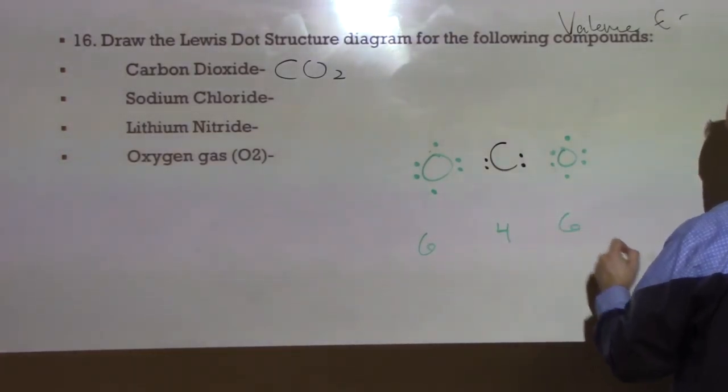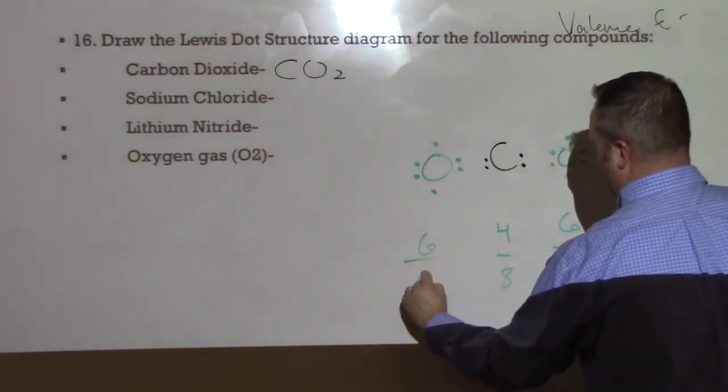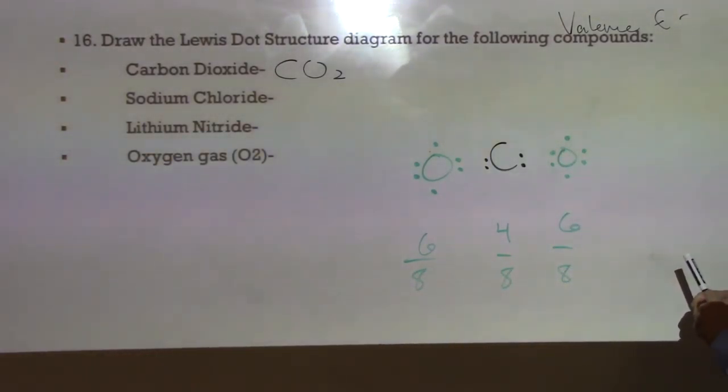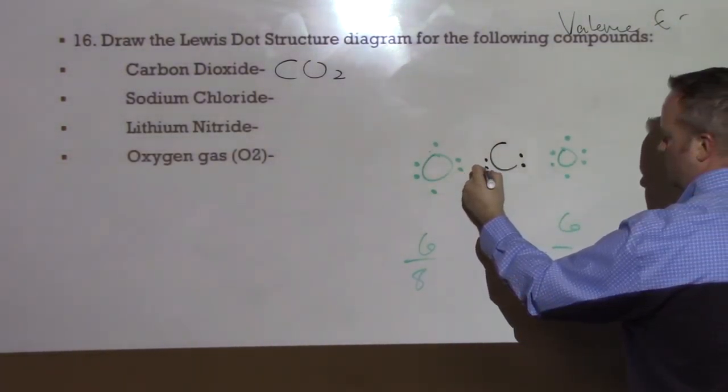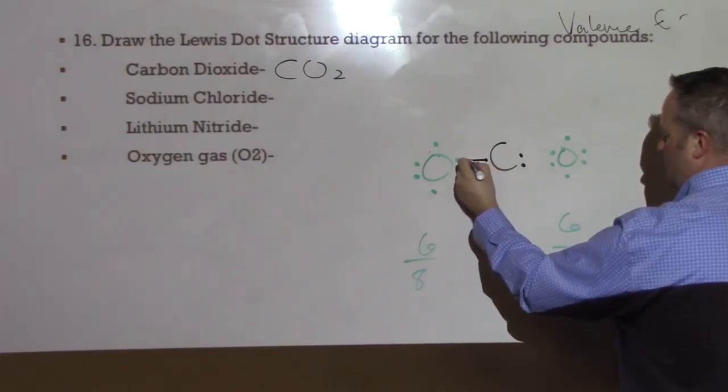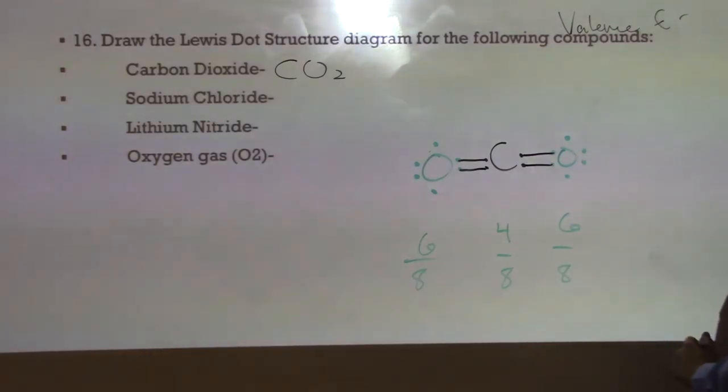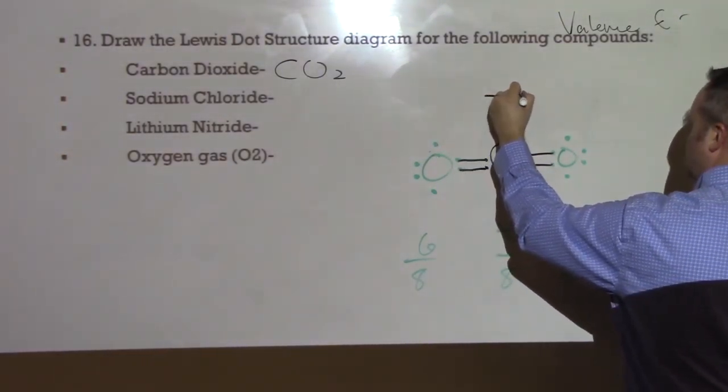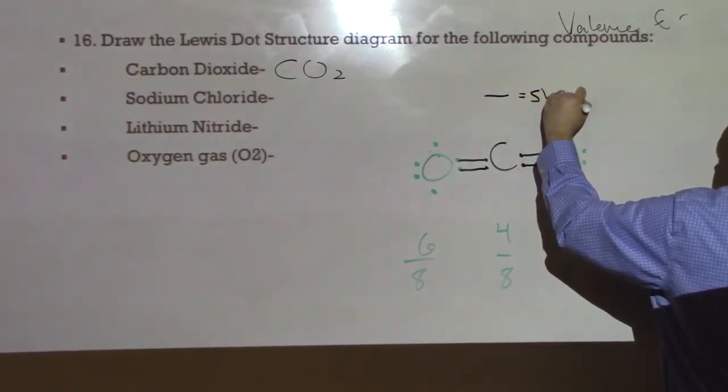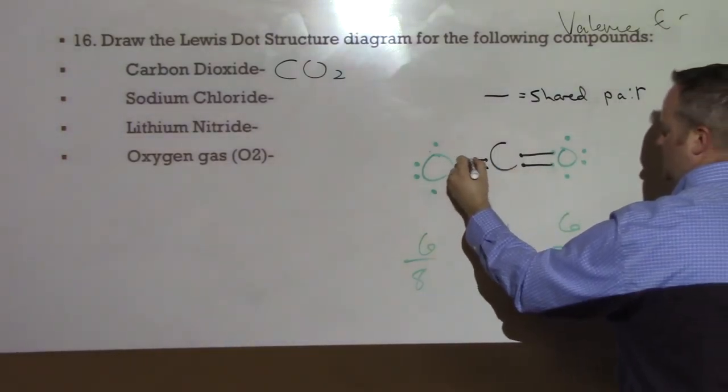Alright. So, with a covalent bond, remember that what we are doing is we are sharing valence electrons and right now, oxygen has 6, carbon has 4 and this oxygen has 6 and everybody wants to have 8. The goal of a bond is to have 8. So, what's going to happen here is carbon needs to get 4 more and it's going to reach over and it's going to share that electron, it's going to share that electron and then over here it's going to share these with that atom.